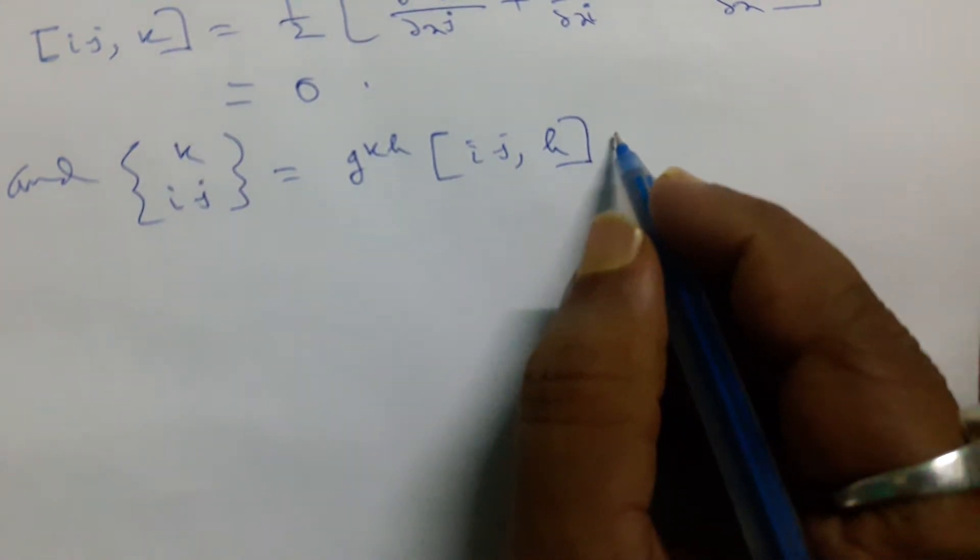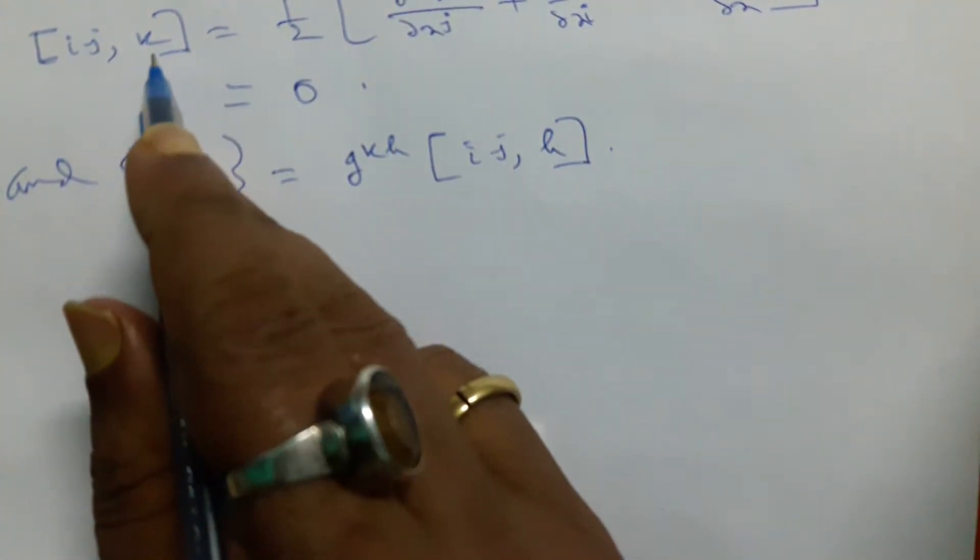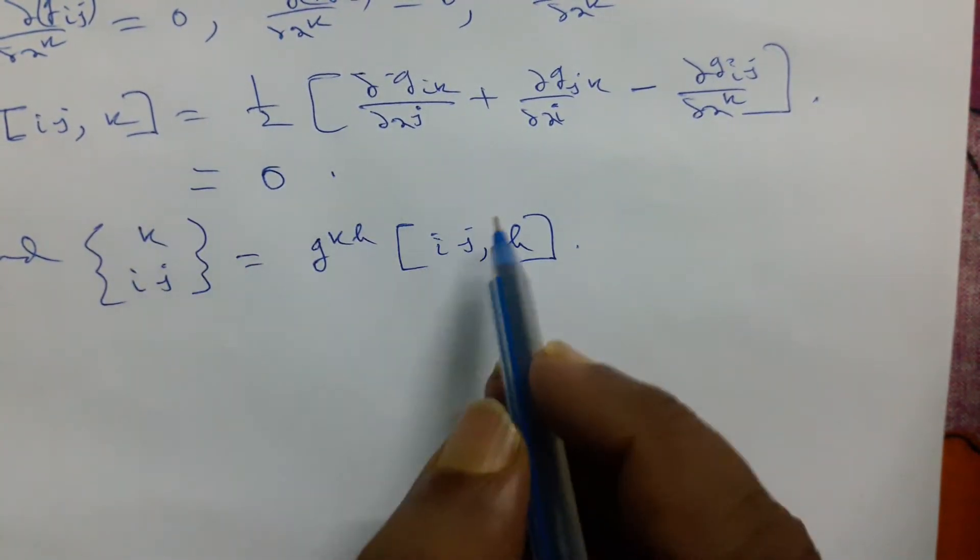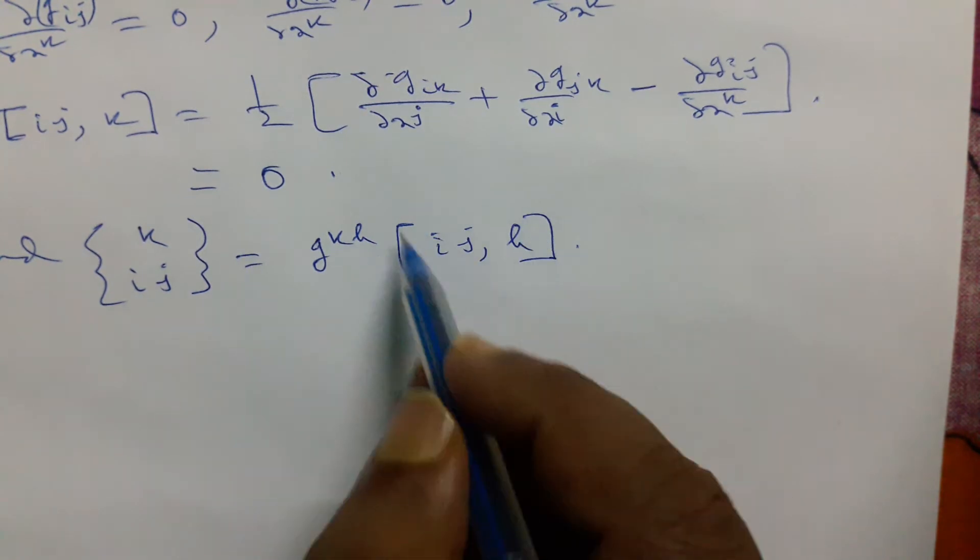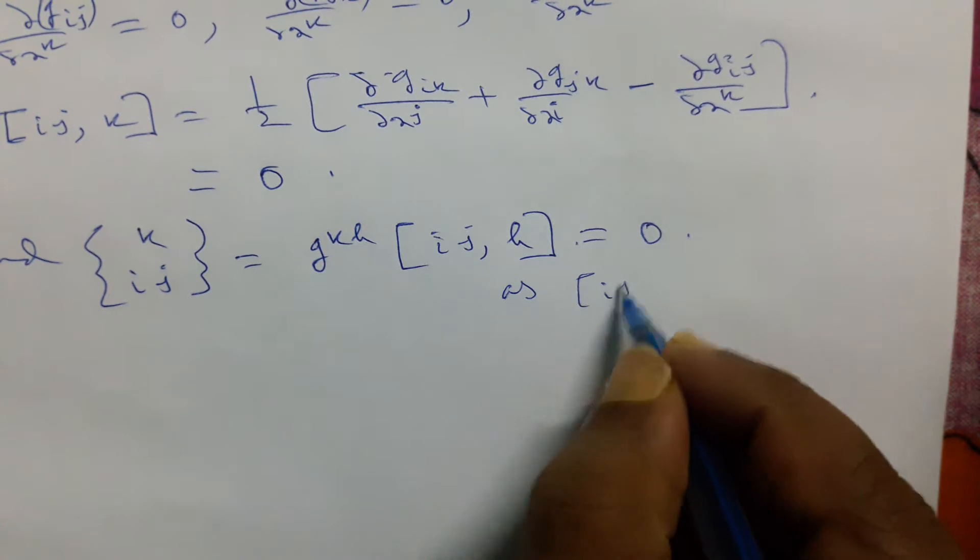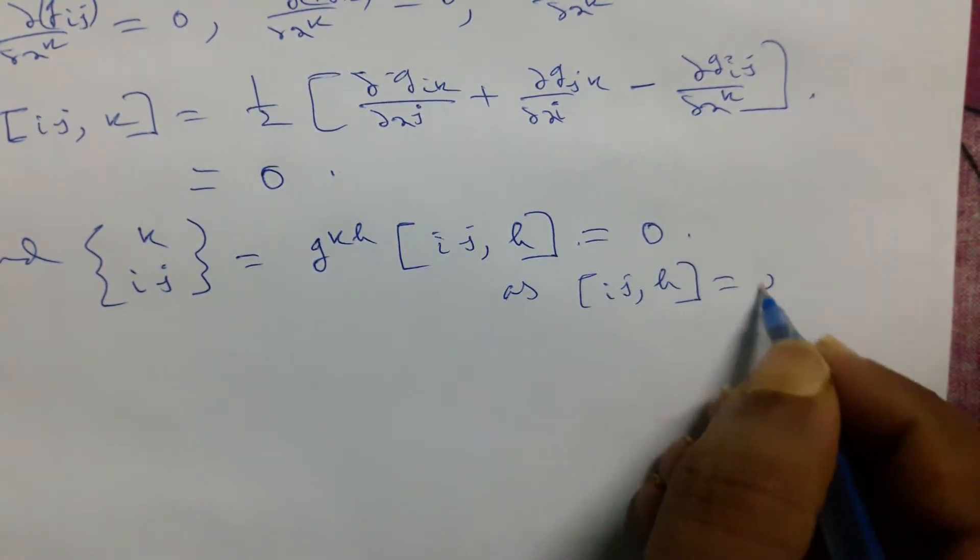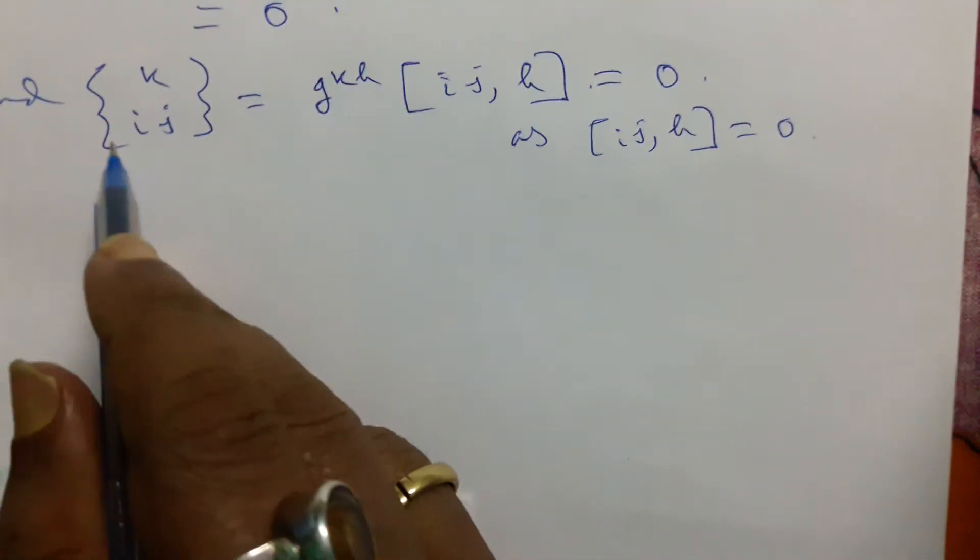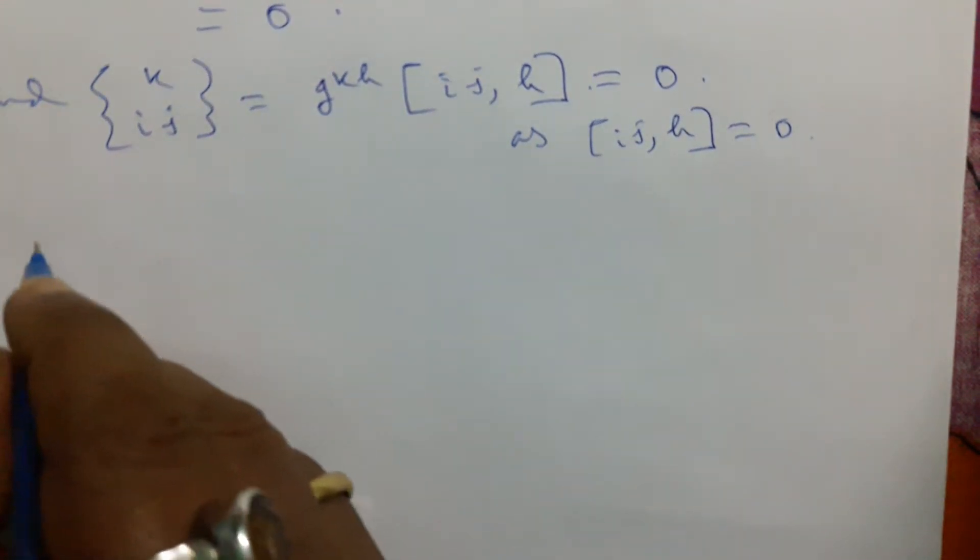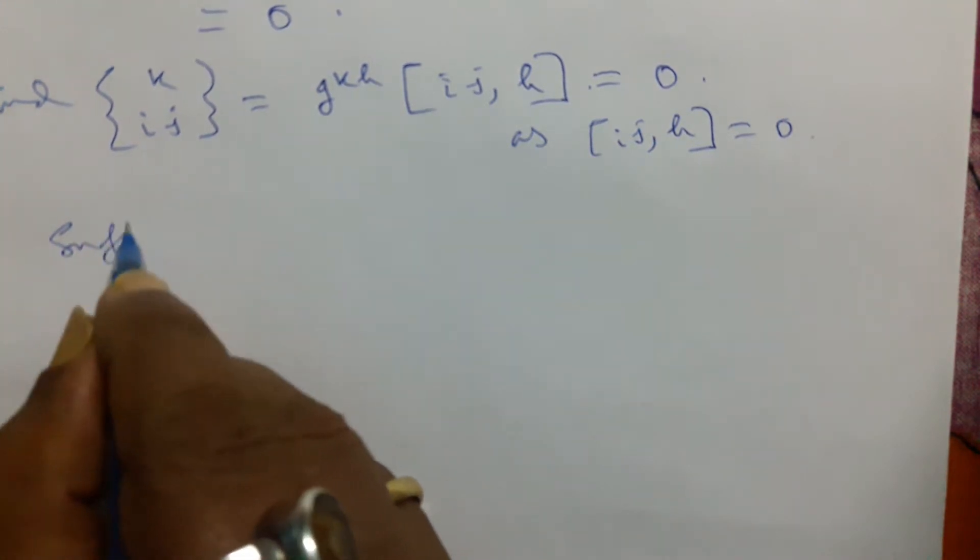The earlier situation, if we replace k by h, then the term is the same. It will be zero. So Christoffel symbol of second kind will also be zero. Now we prove the sufficient condition, the next part.